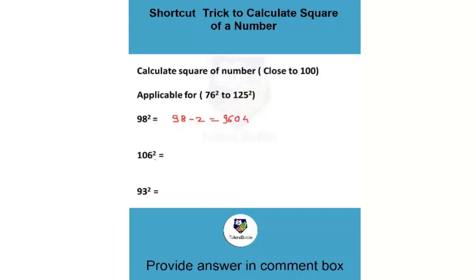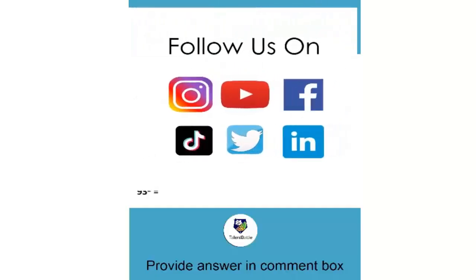Same way you can check 106. Write down that number. Now 6 is positive difference, so plus 6. So it will be 112. Square of the difference which is 36. Now you need to tell me a square of 93 in the comment box. For more such videos do follow talent battle.